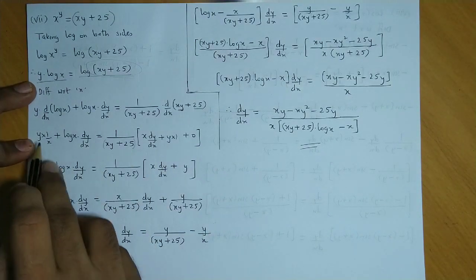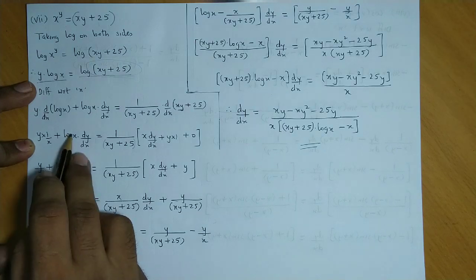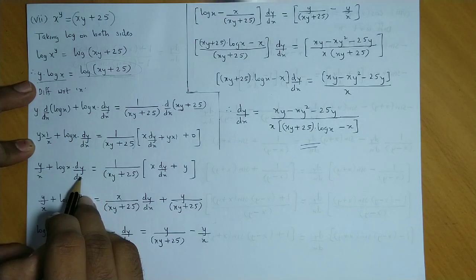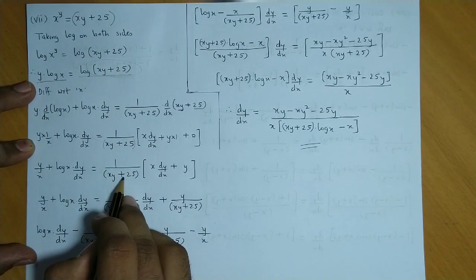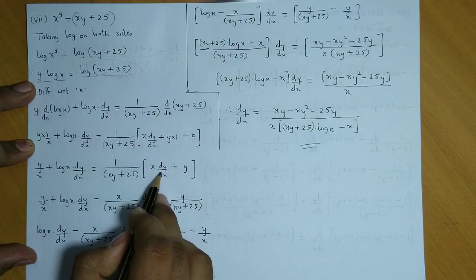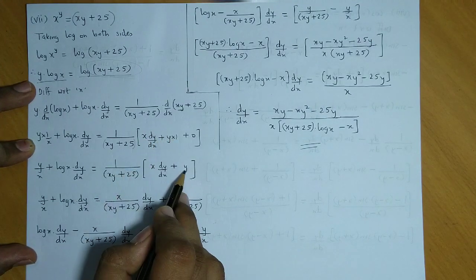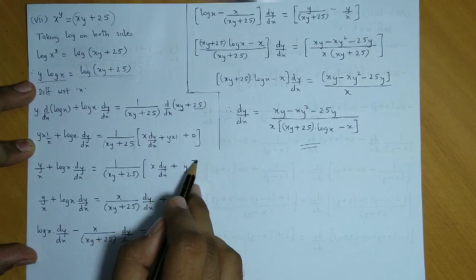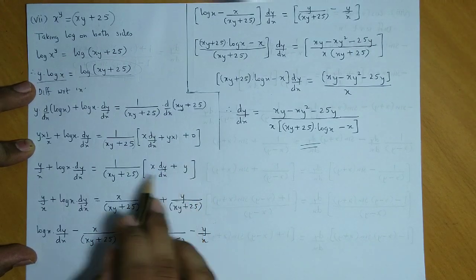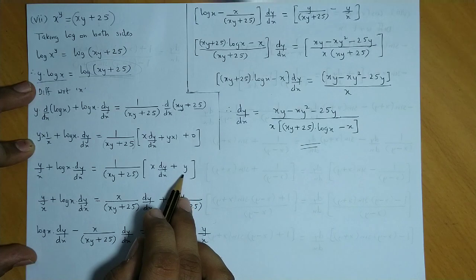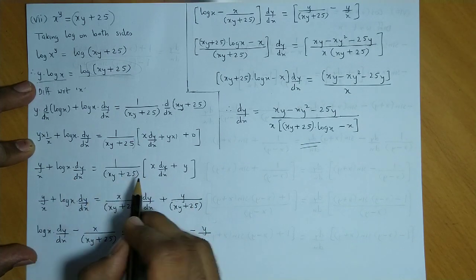So on the left hand side you get y by x plus log x dy by dx, is equal to this term as it is. In the bracket, x dy by dx plus y into 1, which is y. This 0 we have removed.